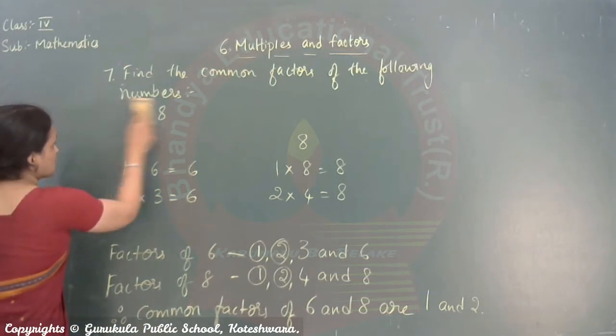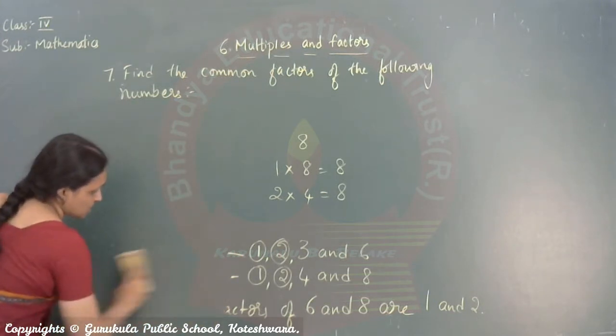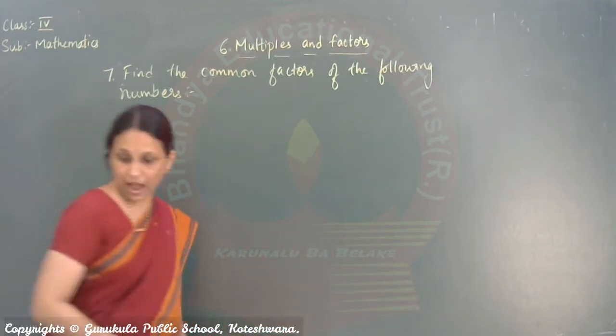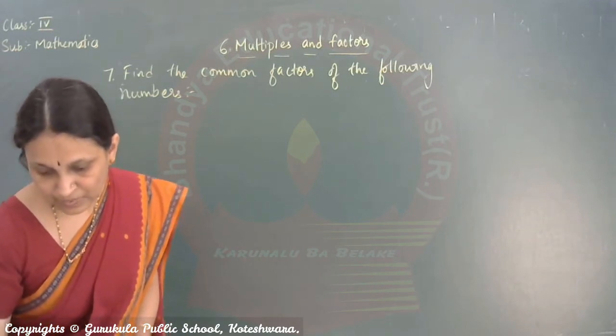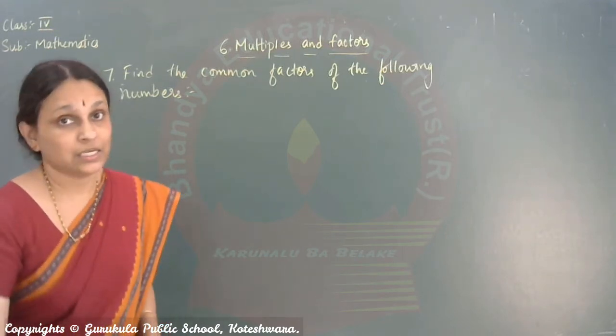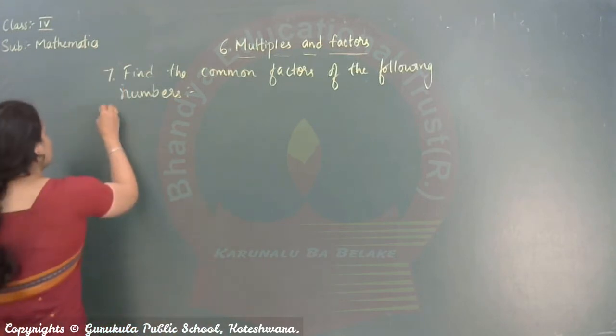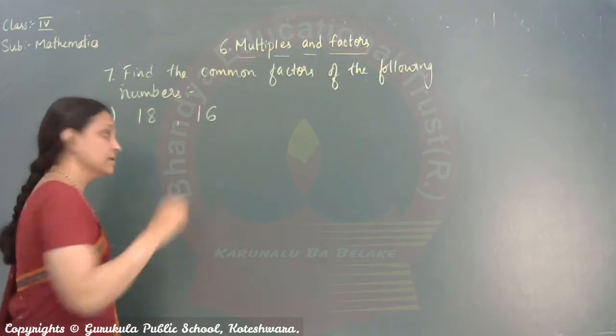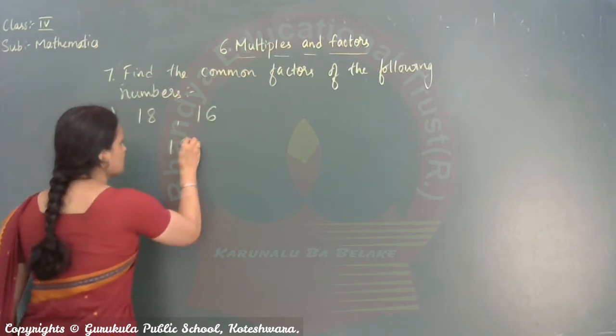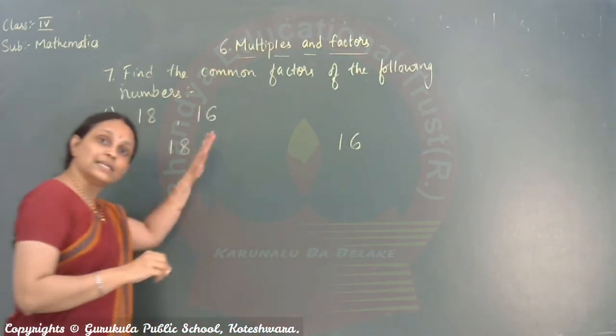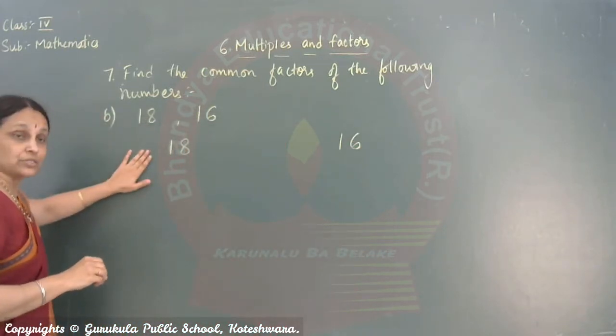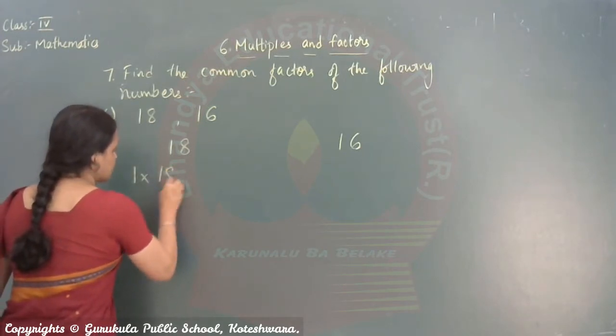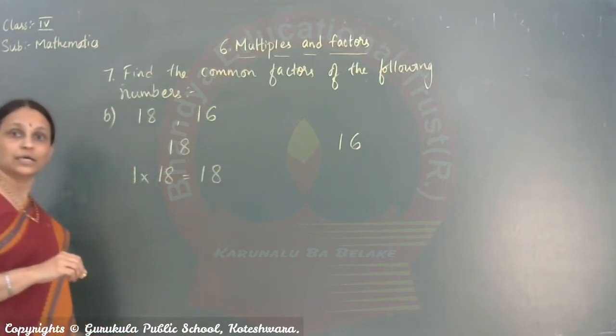Let us move on to next sum. What is the next sum in the textbook? Just check children. What are the two numbers given there? Yes. The two numbers are 18 and 16. Write down the numbers. Find the factors. Let us find out the factors of 18 first. 1 times 18 equals 18.